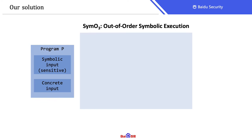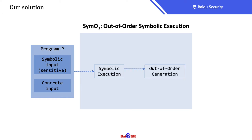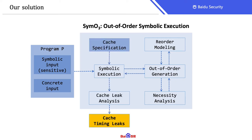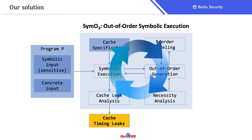To address the challenges, we propose a technique named out-of-order symbolic execution. Specifically, given a program with symbolic input and concrete input, we start the symbolic execution. At memory instructions, the symbolic executor calls out-of-order generation to generate potential out-of-order behaviors. In the out-of-order generation, it invokes necessity analysis to filter unnecessary out-of-order cases. It also leverages re-order modeling to realize the out-of-order execution of two memory events in new symbolic states. With the generated new symbolic states, the symbolic executor conducts the cache leak analysis with the given cache specification and outputs detected leaks.